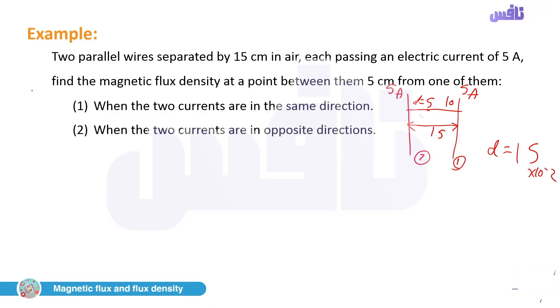For case one — same direction — between the wires we apply minus. Referring back to the previous slide: when both currents are in the same direction, between the wires we subtract.